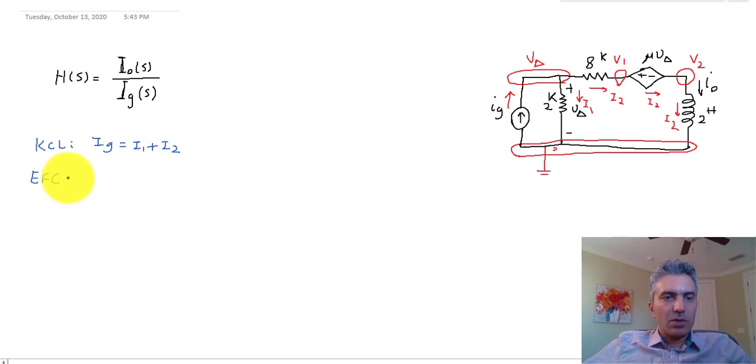Okay, so I_G is equal to I1 plus I2. That's the KCL for the node V_delta. With that we're going to move on to equations for components. For the 2 kilohm resistor, I1 is equal to V_delta minus 0 divided by 2000. I'm going to leave everything in milli. For the 8k resistor, I2 is equal to V_delta minus V1 divided by 8000.